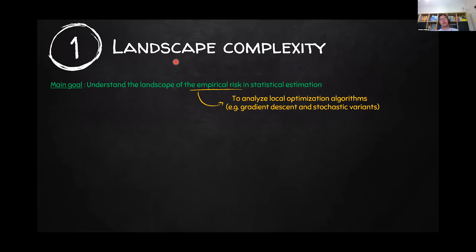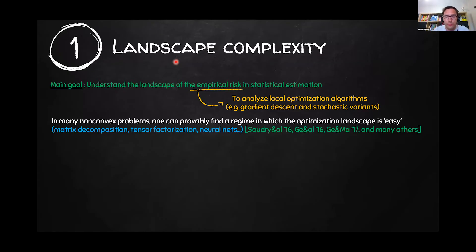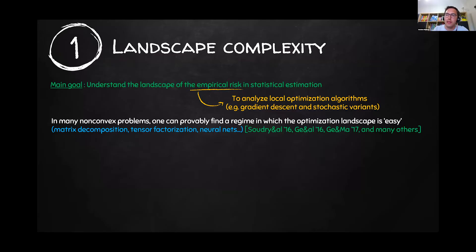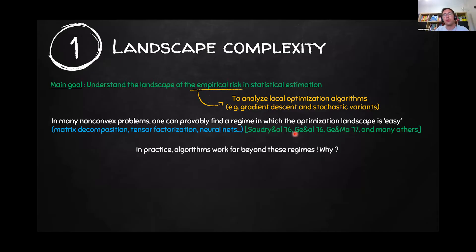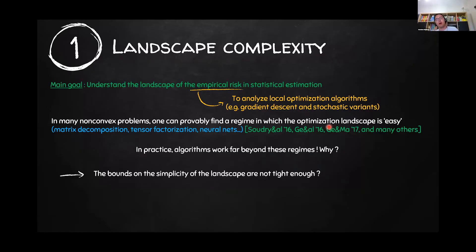Interestingly, in many statistical problems of this kind, there has been a lot of work to prove that there exists a regime in which the optimization landscape is easy — meaning there are no spurious local minima. However, many of these algorithms often work far beyond these provable regimes. One reason is that the bounds are not tight enough and the landscape is actually easy far beyond these bounds.